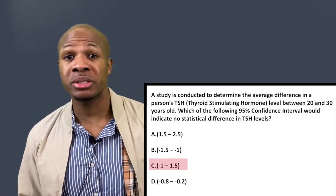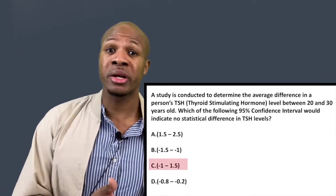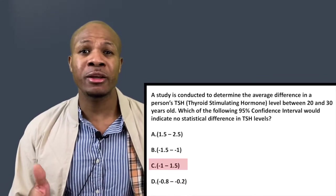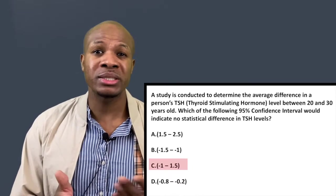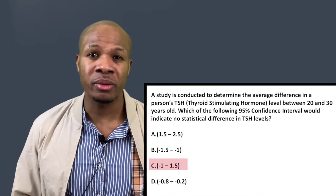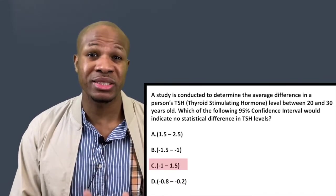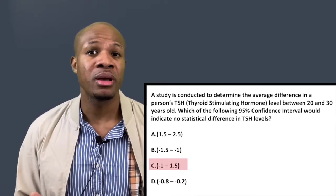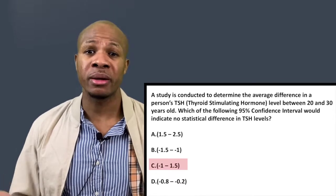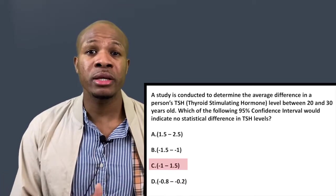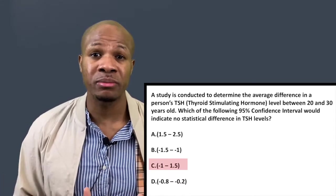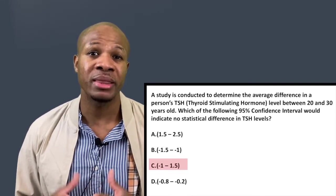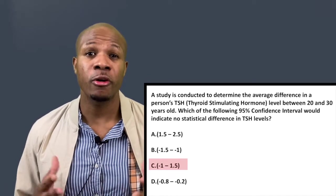That interval says TSH levels could decrease or increase — it doesn't know which direction. The fact that it can go up or down means the interval is not statistically significant, because it includes the possibility of no change. All other intervals have a definite position. So answer choice C is not statistically significant and is the correct answer.